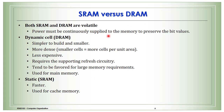Comparing SRAM and DRAM: both are volatile, meaning they lose contents when power is switched off. DRAM is simpler to build, smaller, and less expensive, but requires refresh circuitry; it is used for large memory requirements like main memory. SRAM is faster than DRAM and is normally used for cache memory.